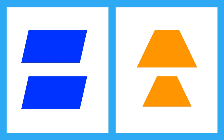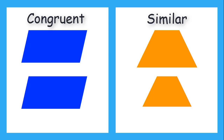How would you identify these blue parallelograms? Are they the same shape and size? Yes. So we can say that these two shapes are congruent. Now what about the orange trapezoids? Are they the same shape and size? Well, they aren't the same size, but they are the same shape. So these aren't congruent — they are similar.